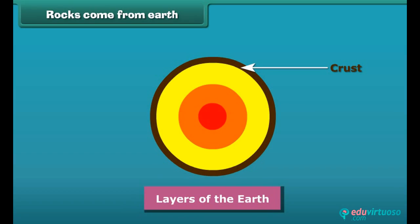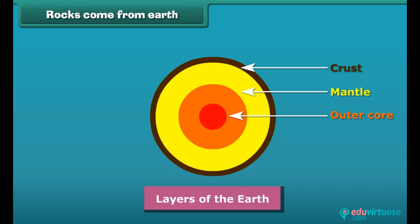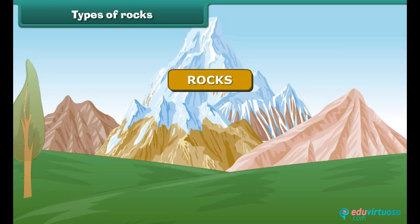The middle and innermost layers are known as the mantle and the core respectively. The mantle and outer core are very hot due to high temperature, so rocks are found there in melted form. In the inner core, rocks are solid due to high pressure. There are three main types of rocks depending on how they are formed.